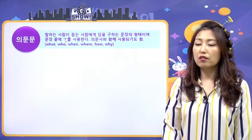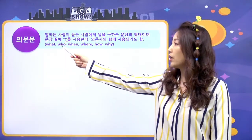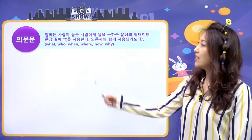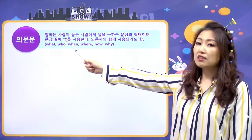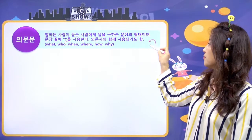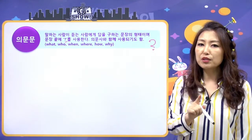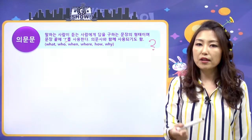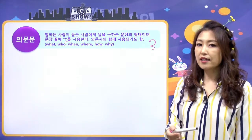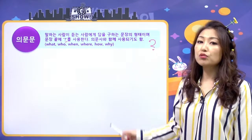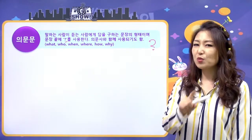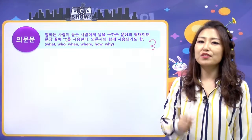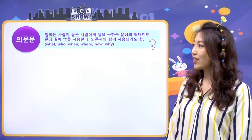의문사와 함께 사용되기도 해요. 의문사는 what, who, when 이거는 나중에 다음 강에서 해볼게요. 문장 끝에 question mark를 사용해서 의문문임을 표시하고요. 의문문을 봤을 경우에는 답을 하는 법도 같이 알아야 해요. 지금 비동사에 관해서 하고 있고, 의문문은 질문이고 끝에 물음표를 사용한다는 것이 중요 포인트예요.